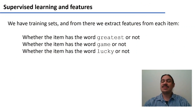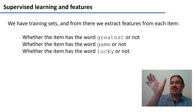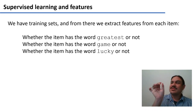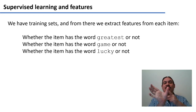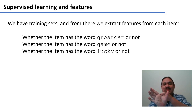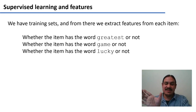We've been looking at supervised learning. So far, we have had training sets made of documents, and then we extract some features from those documents. For example, whether it has the word greatest or not, whether it has the word game or not, whether it has the word lucky or not. These features represent our documents.